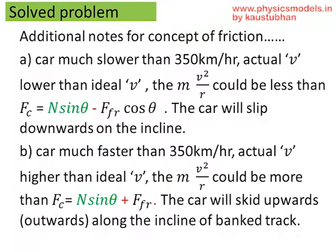The same logic is used when the car goes faster than 350 kilometers per hour. The m v squared by r increases tremendously. And that could be more than the provided centripetal force, N sin theta plus frictional force.